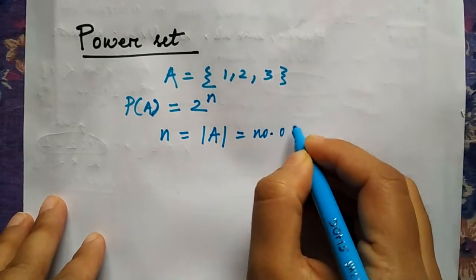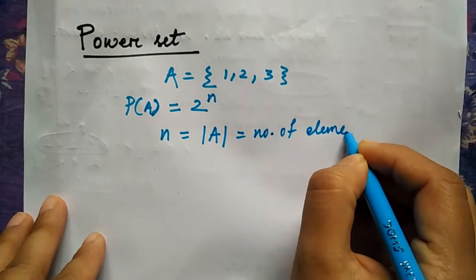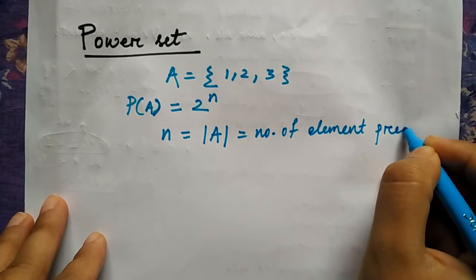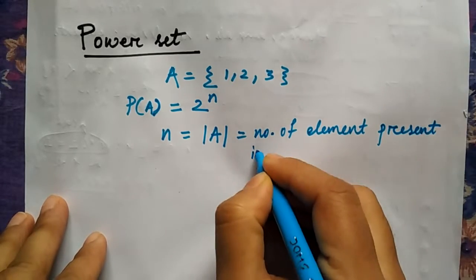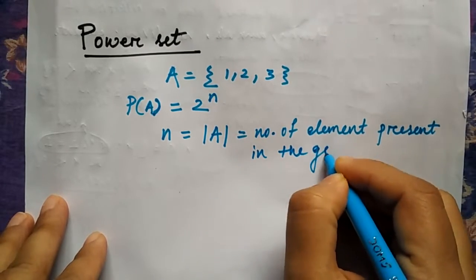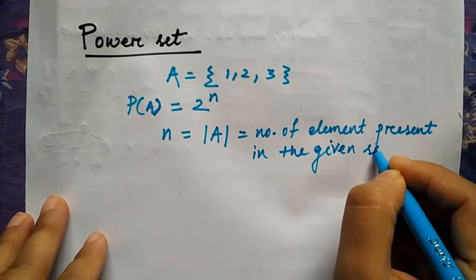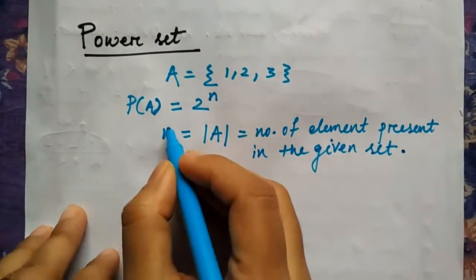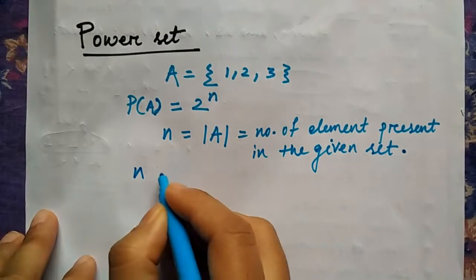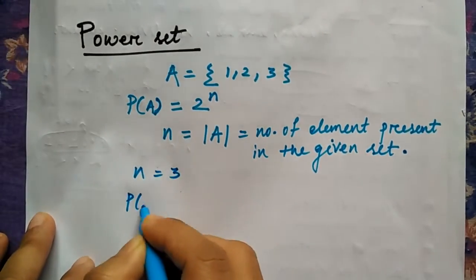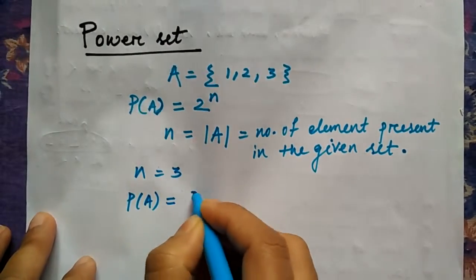What is mod of A? Mod of A means the number of elements present in the given set. So here, how many elements are there in the given set? That is 3.